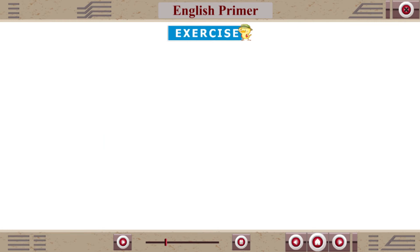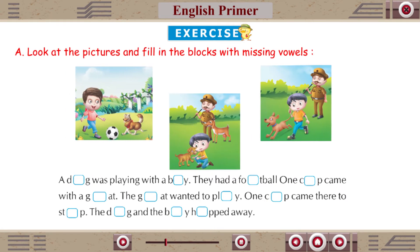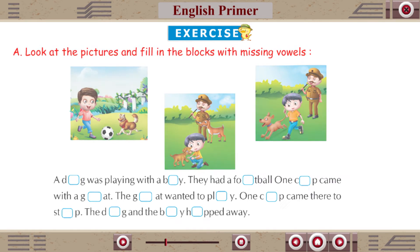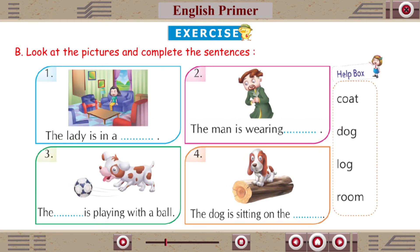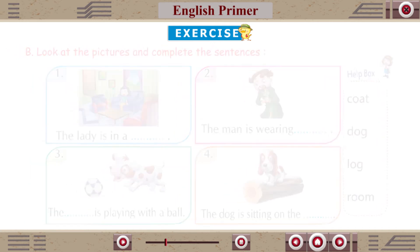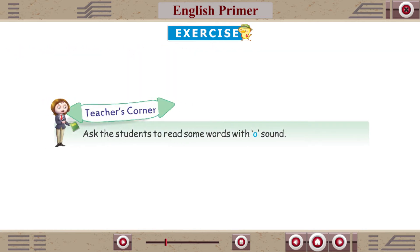Exercise A: Look at the pictures and fill in the blocks with missing vowels. Exercise B: Look at the pictures and complete the sentences. Teacher's Corner: Ask the students to read some words with O sound.